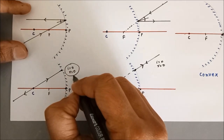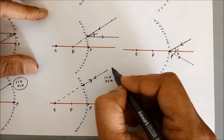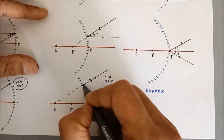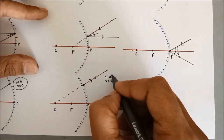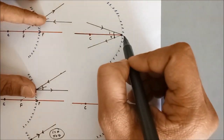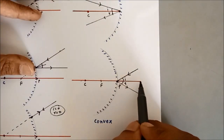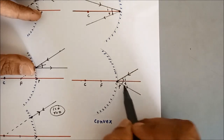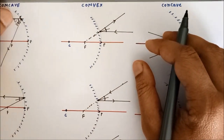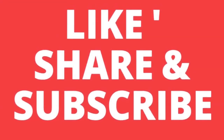For the convex mirror in Rule 3, if the incident ray falls on the mirror such that extending it goes through C, the normal coincides with the ray and both angles of incidence and reflection are 0. Rule 4 states that if the incident ray falls directly on the pole, whether concave or convex, the normal itself is the principal axis, and after reflection the ray goes to the other side of the normal at the same angle. For image formation, two rays are required and you can select any two of these four rules. Thank you.